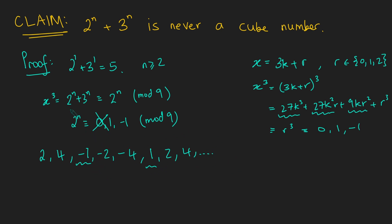So if we want 2 to the n plus 3 to the n to be a cube number, we said that 2 to the n must be either 0, 1, or minus 1 mod 9. And the only possibilities are minus 1 and 1. And that only occurs every third position. So this tells us that n must be a multiple of 3. So I'll call it 3m for some number m.